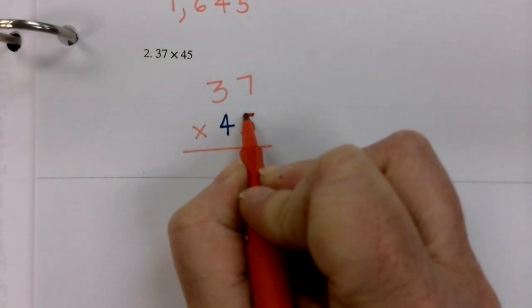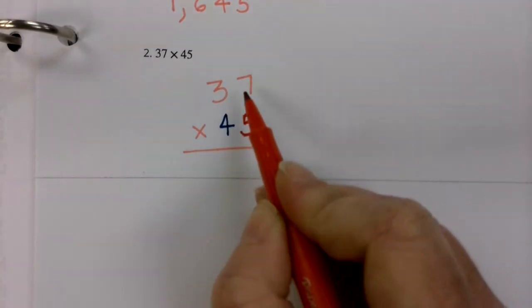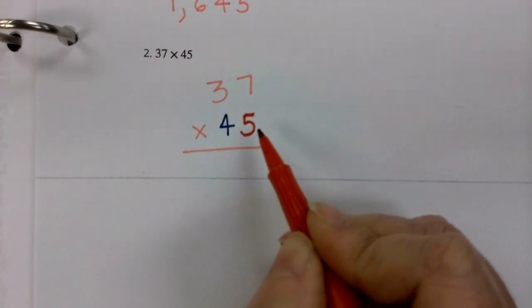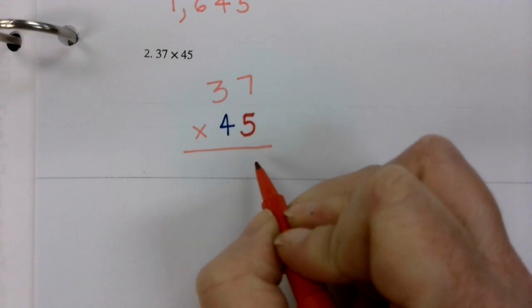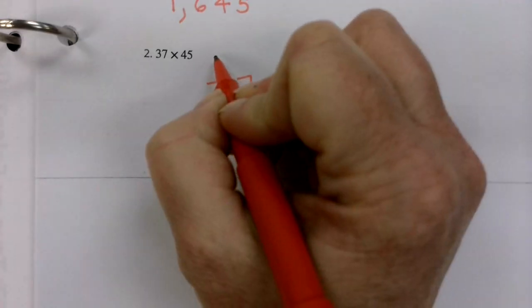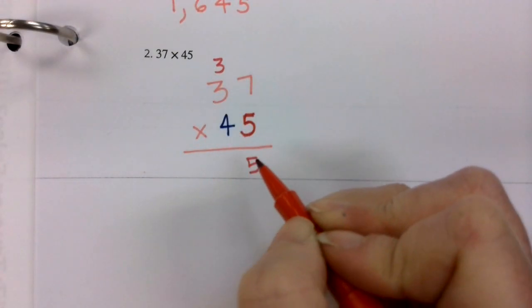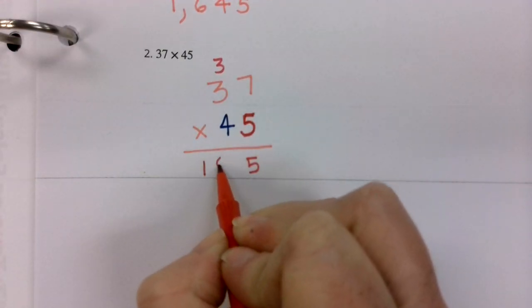Let's go ahead and get started with this five as being our first center of this multiplication problem. Five times seven is 35. So here's my five. Carry my three. Five times three is 15. Plus three more is 18.